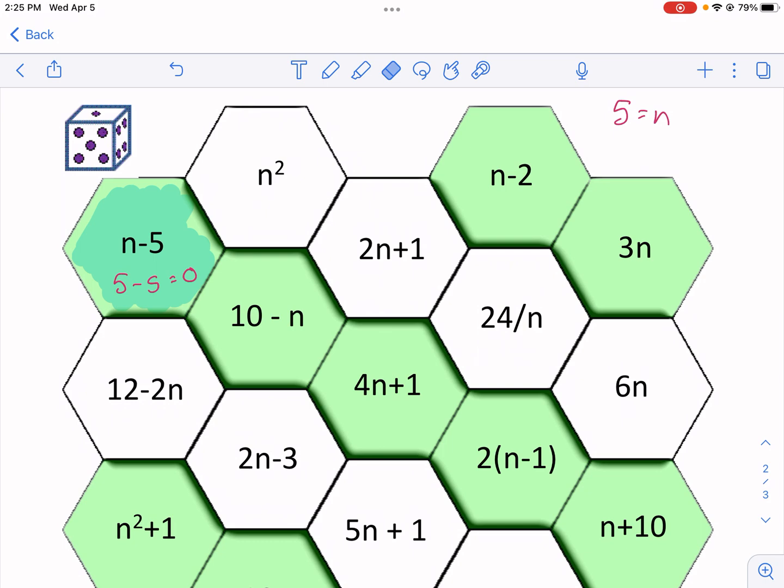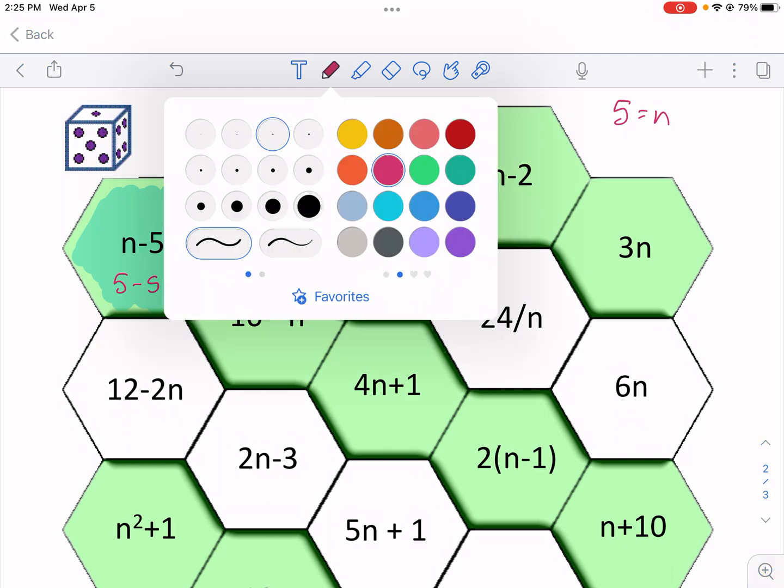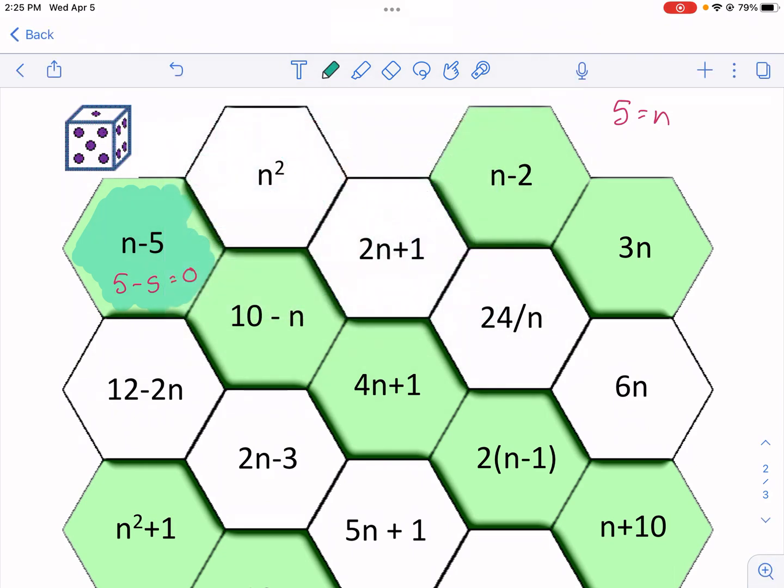My other person would take a turn and he rolled a six. So for this person we'll make this person the green person. He had six equals n, so then he's gonna pick something. He's gonna pick this one: n squared. Well, that's the question, right? I'm evaluating. So I have six squared equals, and it's 36. That one's correct.